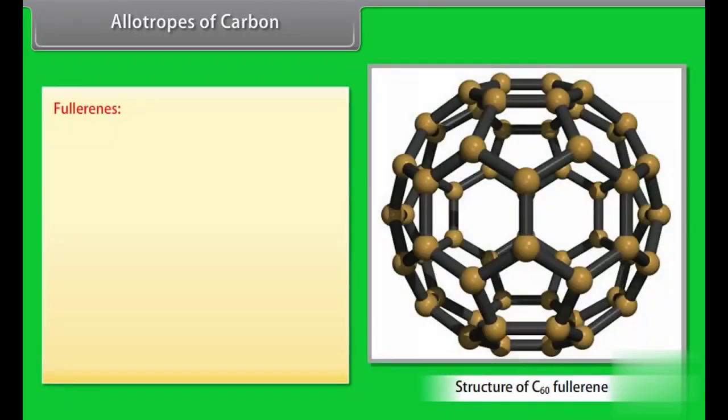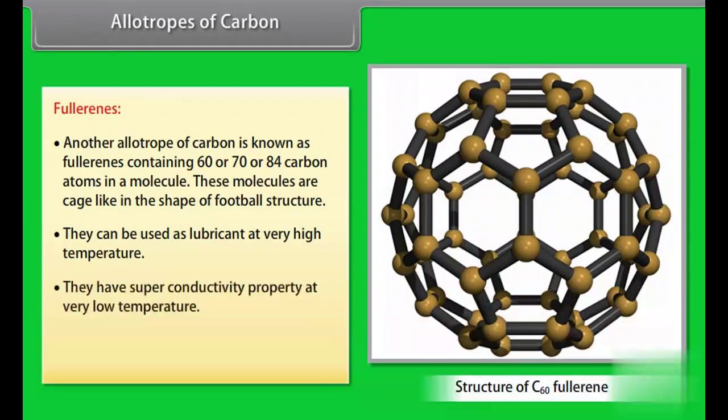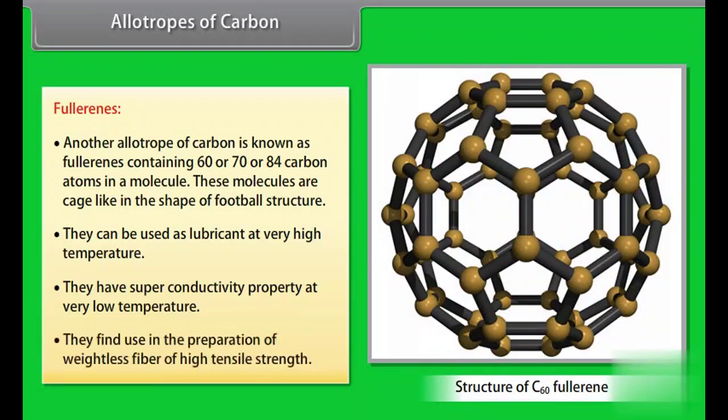Fullerenes. Another allotrope of carbon is known as fullerenes containing 60 or 70 or 84 carbon atoms in a molecule. These molecules are cage-like in the shape of football structure. They can be used as lubricant at very high temperature. They have superconductivity property at very low temperature. They find use in the preparation of weightless fiber of high tensile strength.